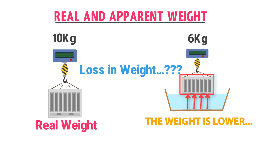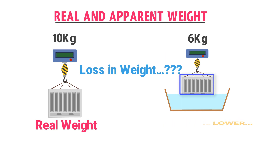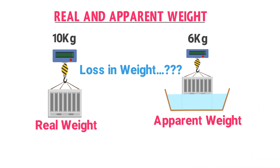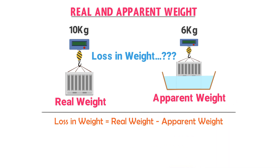In water, the weight of this object is lower due to the upward force of the water — reduced to 6 kg. As long as this object is held in water, the reading on the spring balance will be 6 kg. When you take this block out of the water tub, the reading returns to 10 kg. The weight of this object in the water tub is known as the apparent weight.